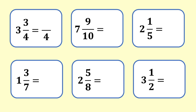Express each of these mixed fractions as improper fractions: 3 and 3 quarters, 7 and 9 tenths, 2 and 1 fifths, 1 and 3 sevenths, 2 and 5 eighths, 3 and 1 half.